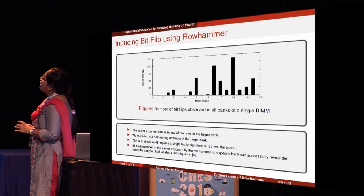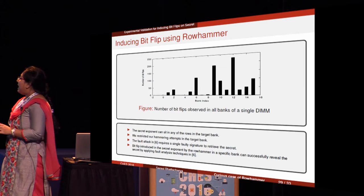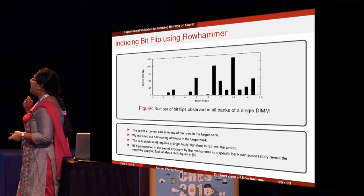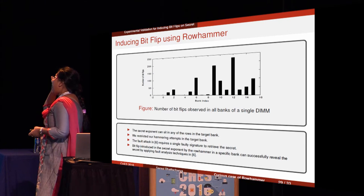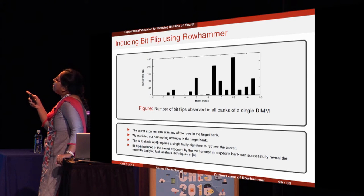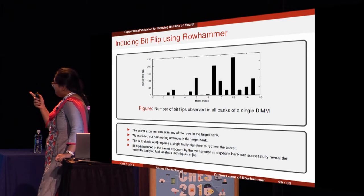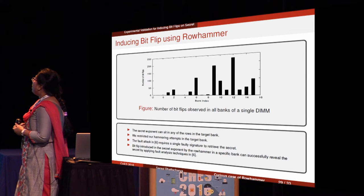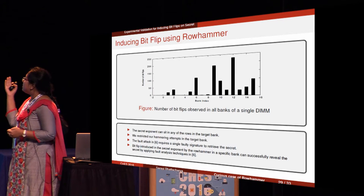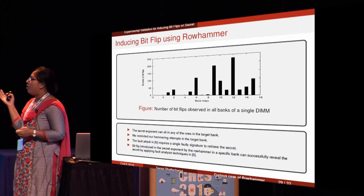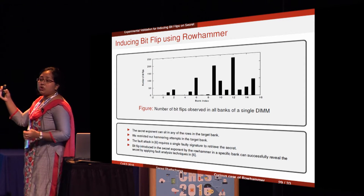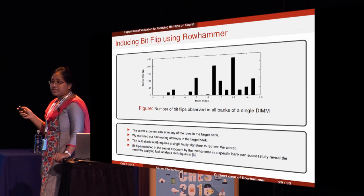Next, we introduced RowHammer by repeatedly accessing elements in that particular bank. The number of bit flips observed across bank indices — there are 16 banks in the DIMM — varies considerably. These results were collected over seven days of execution, and after seven days we observed this many bit flips. This is really scary.